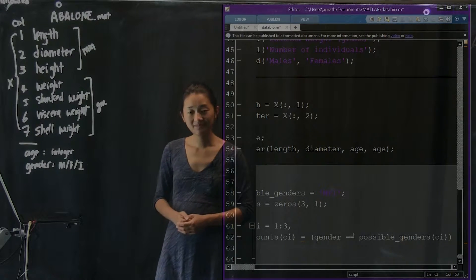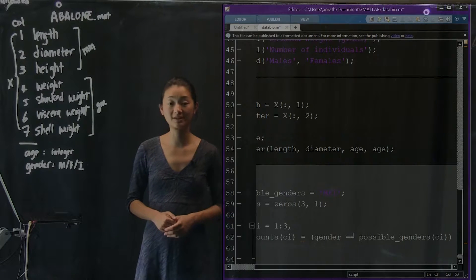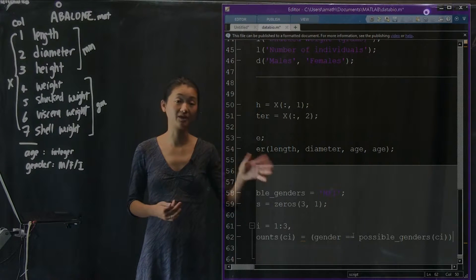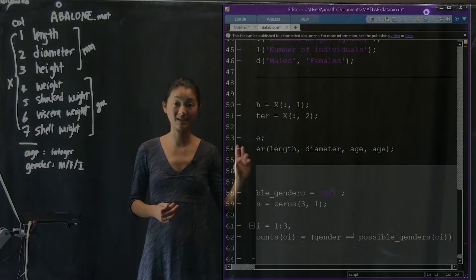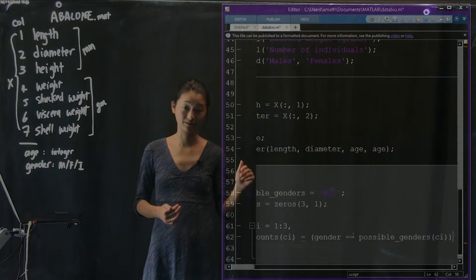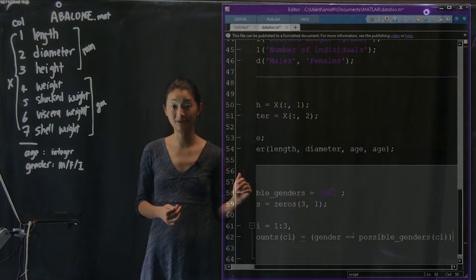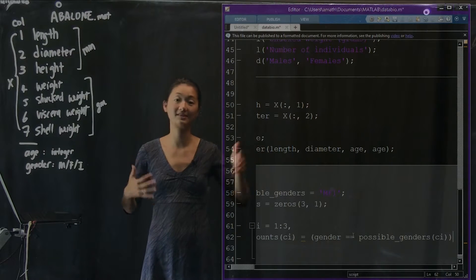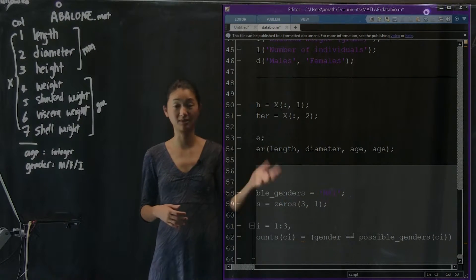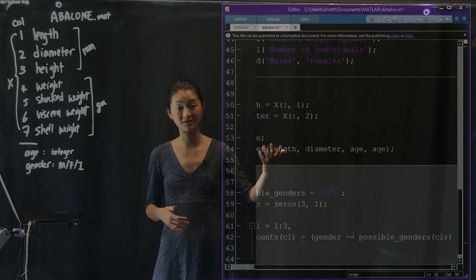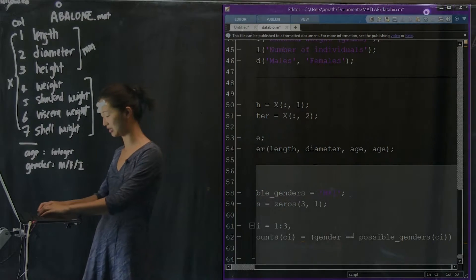To count the number of possible individuals that were labeled as being m, all we have to do is find the sum of that vector. Because we're asking the question, does it equal to m? Every time it equals to m, we get a one, otherwise we get a zero. So the number of m's is just the sum of that vector. So this is a nice shortcut.